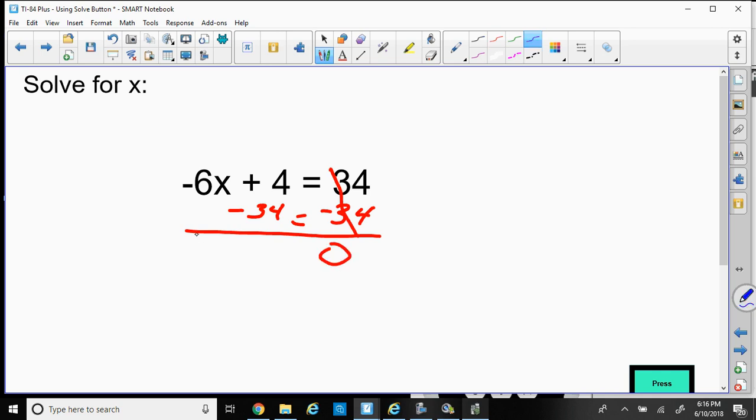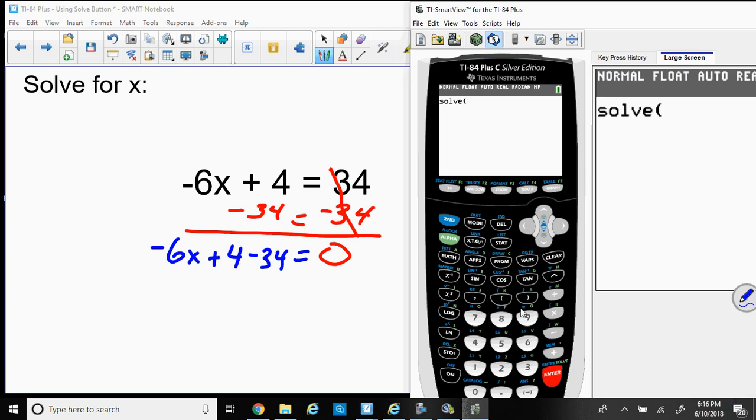Over here usually I would take the -6x and combine the 4 and the -34, but I'm not. I'm going to put +4 and make that a -34 and let the calculator do the work for me. So here is my equation. Now I'm going to type it into the calculator. So -6, there's an x button up here next to alpha, +4 and -34. There's my equation. Notice is equal to zero.